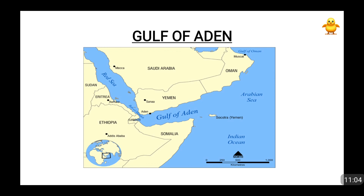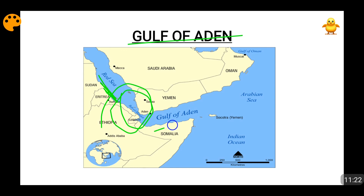Coming to the Gulf of Aden. To remember: the northeastern tip of the Red Sea is the Gulf of Aqaba, the northwestern tip is the Gulf of Suez, and when you cross the Bab-el-Mandeb Strait at the southern tip, you directly enter the Gulf of Aden. The countries surrounding the Gulf of Aden are Yemen, Djibouti, and Somalia — it lies between Yemen and Somalia. It is also a very important trading route because from here you go to the Red Sea, then the Gulf of Suez, and directly into the Mediterranean Sea.